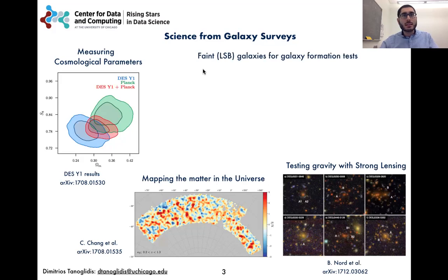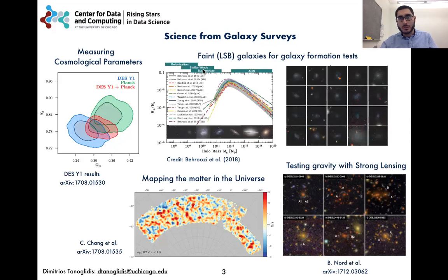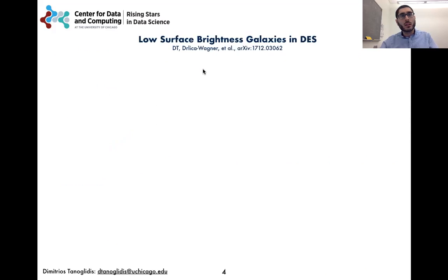Another science case is testing galaxy formation models in the regime of low galaxy brightness and masses, for which we do not have many observations like these. Here, I'm going to describe how we discovered low surface brightness galaxies in the Dark Energy Survey.